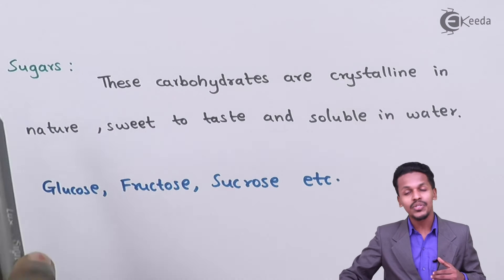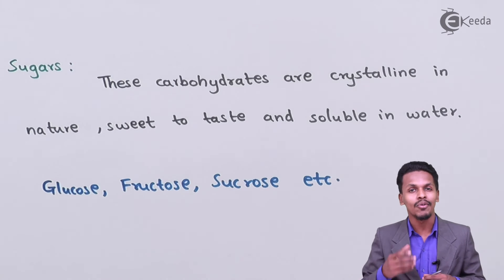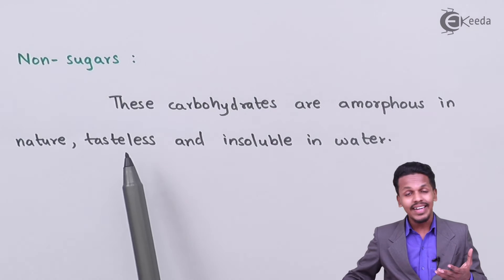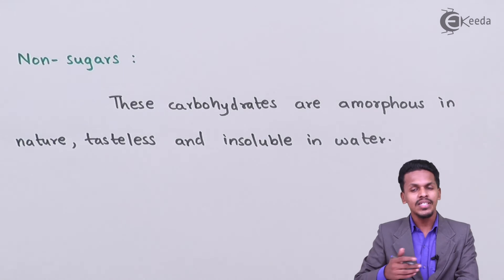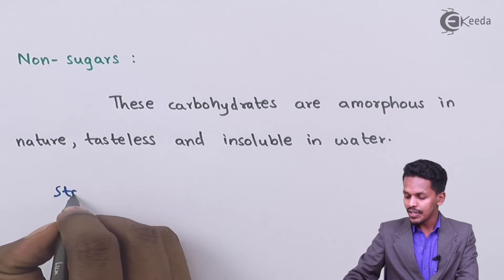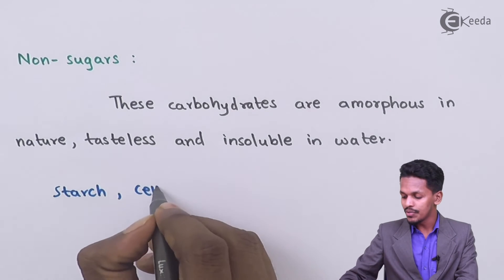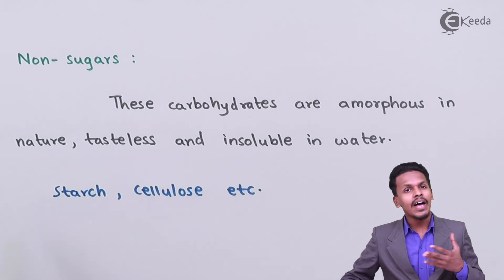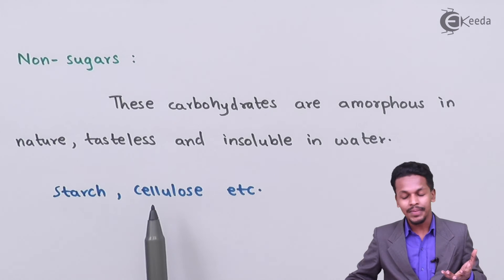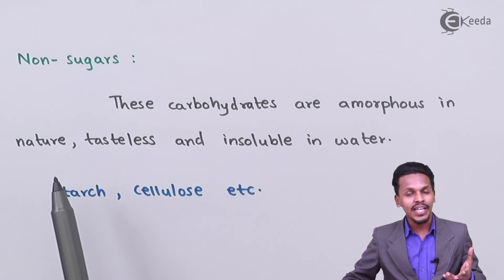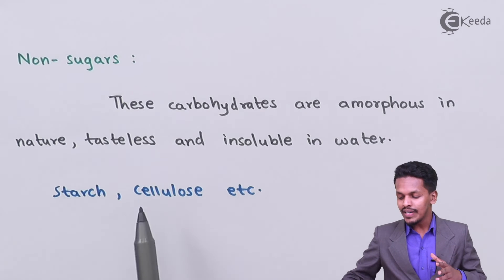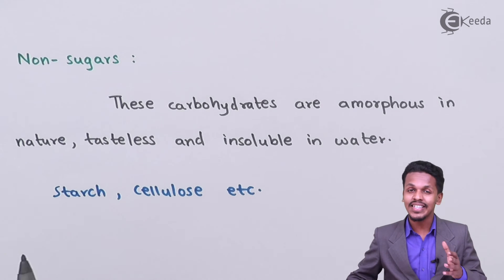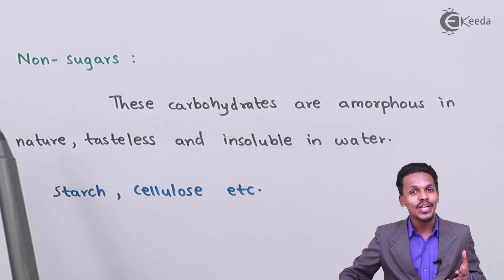Now let me talk about the next classification — non-sugars. Non-sugars are carbohydrates that are amorphous in nature, tasteless, and insoluble in water. For example, starch and cellulose. These carbohydrates are insoluble in water, tasteless, and amorphous. Starch and cellulose come under the category of polysaccharides, so all polysaccharides are basically considered non-sugars.